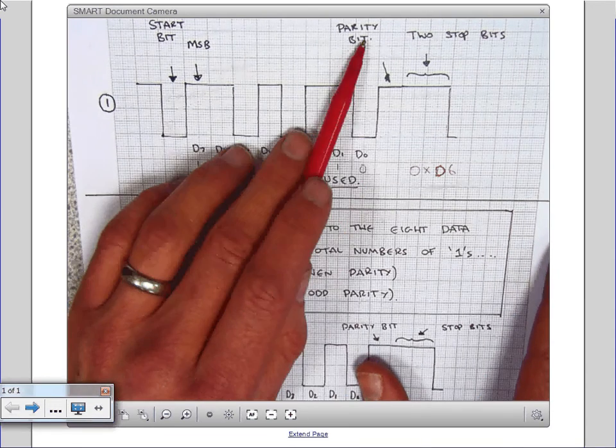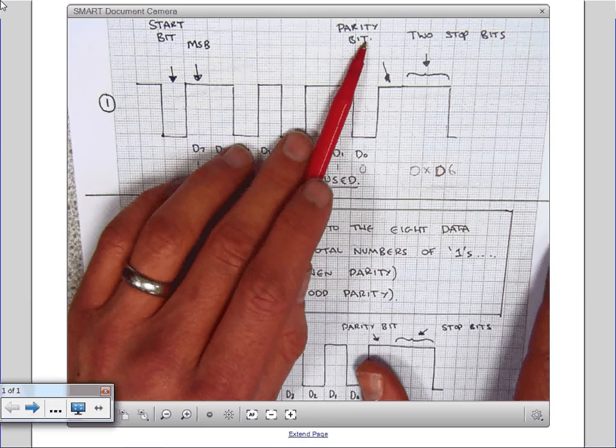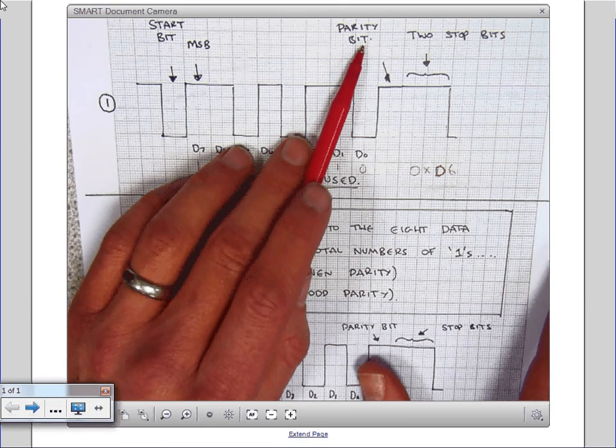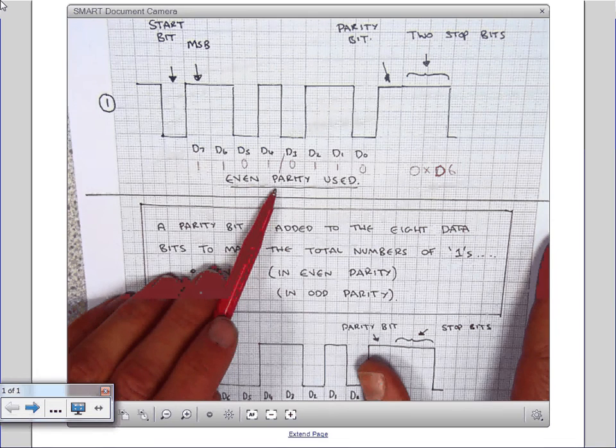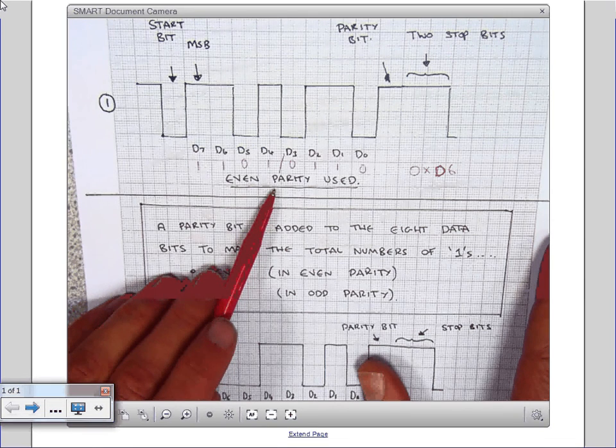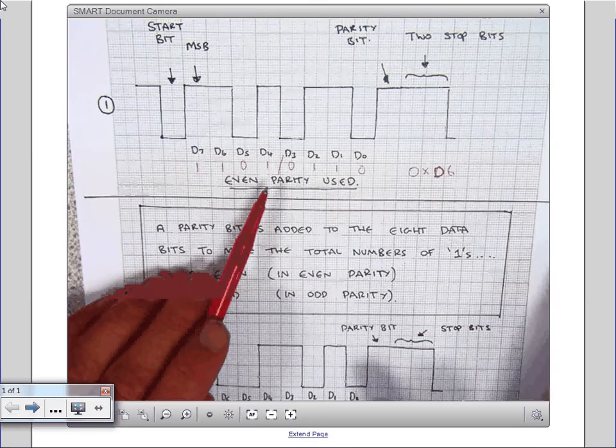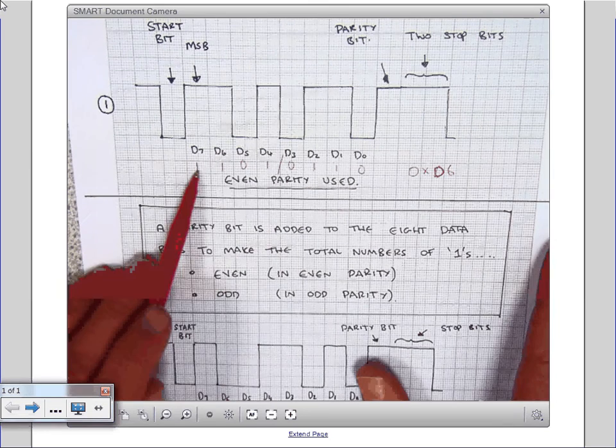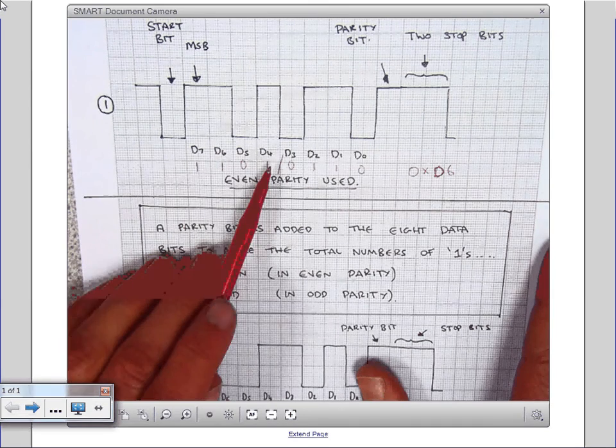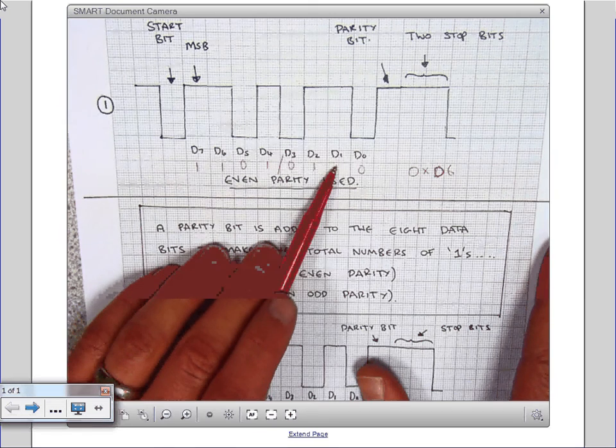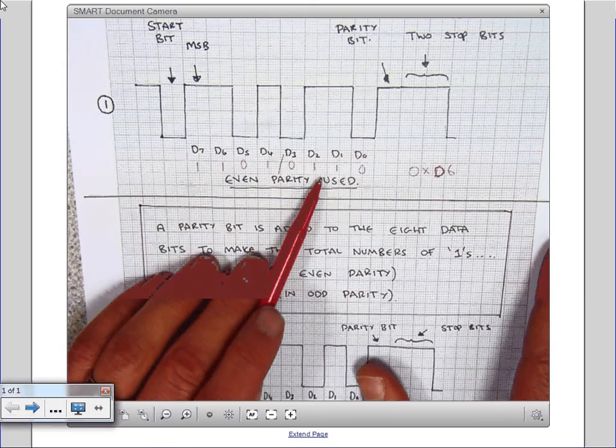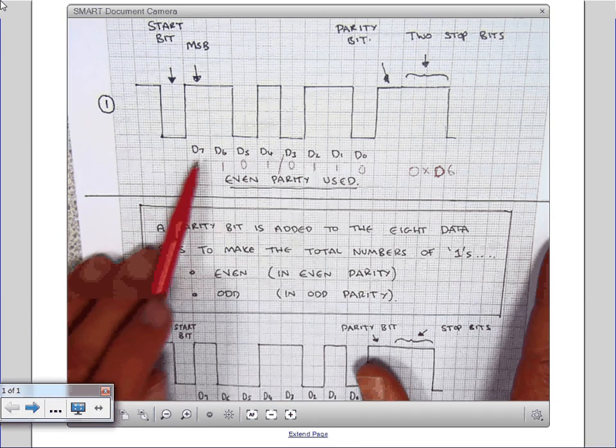Well, parity bit is a way of checking whether there's any error in the data. So in this case, even parity is being used. So we've got one, two, three, four, five bits which are high. Now with parity, what you do is you count the number of bits which are high. In this case, we've got one, two, three, four, five.